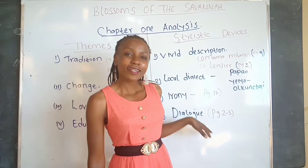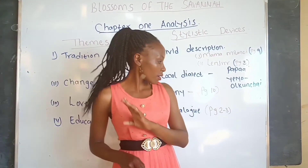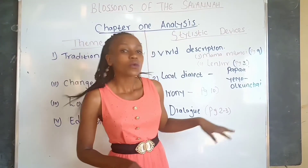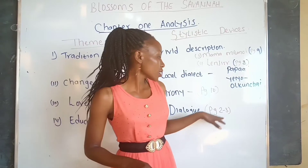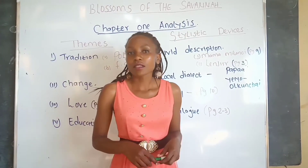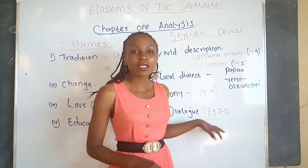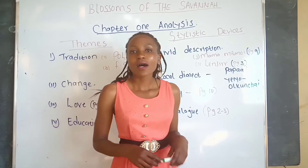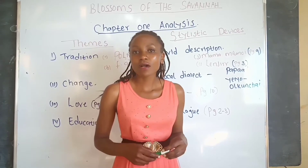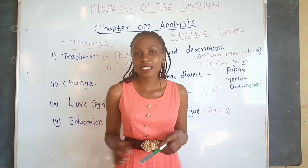The fourth stylistic device is dialogue — a conversation between two or more people. We have dialogue on pages 2 and 3, which is the dialogue between Resian and Taiyo, where they are talking about how life is going to be in Nasila.